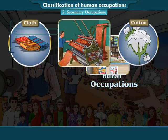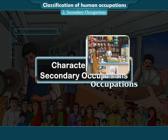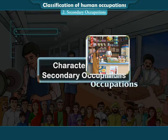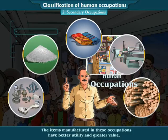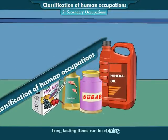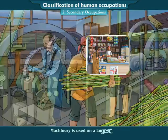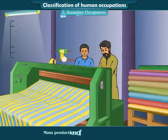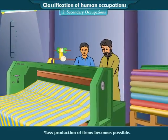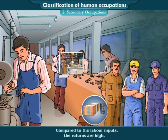For example, obtaining cloth from cotton or sugar from sugarcane. Characteristics of Secondary Occupations: First, the items manufactured in these occupations have better utility and greater value. Second, long-lasting items can be obtained from perishable materials. Third, machinery is used on a large scale in these occupations. Fourth, mass production of items becomes possible. Fifth, compared to the labor inputs, the returns are high.